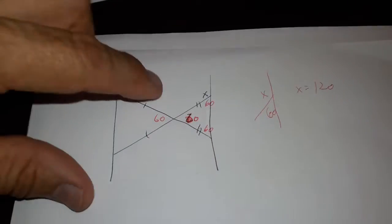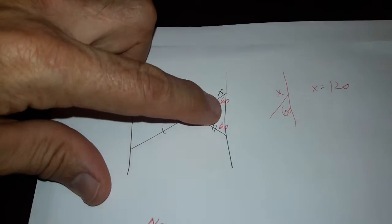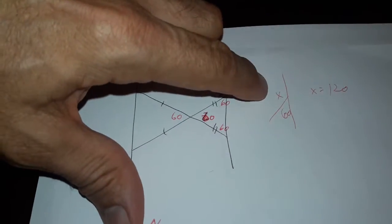So we redraw it. That's 60 and that's 60. Then those two have to be 60, and X is 120.